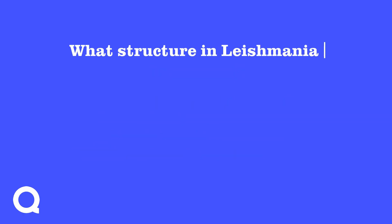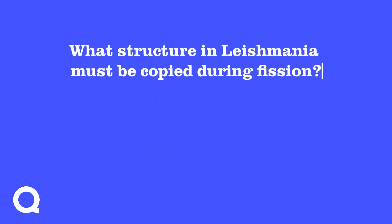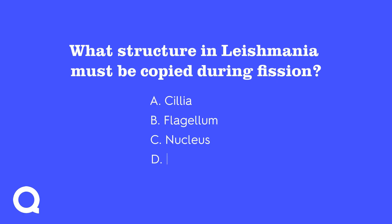What structure in leishmania must be copied during fission? A. Cilia. B. Flagellum. C. Nucleus. D. Mitochondria. The answer is B. The flagellum is a whip-like structure that must be copied, which is why fission happens along a fixed axis.